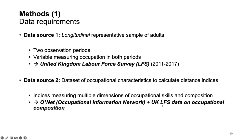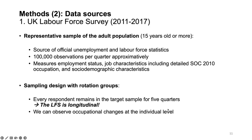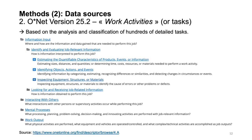The UK Labour Force Survey is a representative sample of the adult population, a large dataset with a lot of information on worker characteristics and their jobs. One feature we leverage is that it uses rotation groups, meaning every respondent is expected to stay in the survey for five quarters, which makes the LFS longitudinal. We can therefore observe any occupational change that occurs within this window of five quarters.